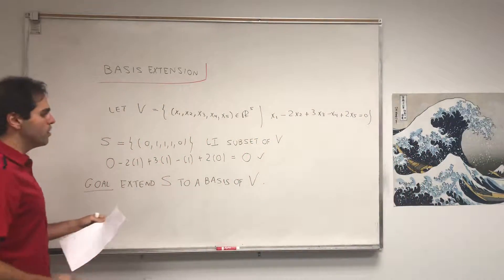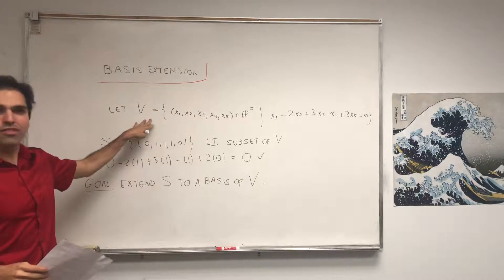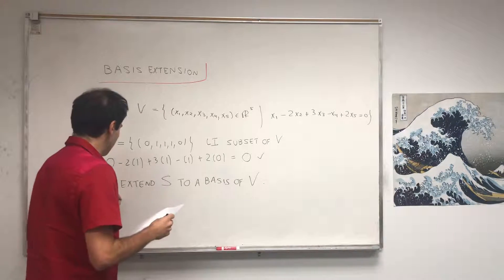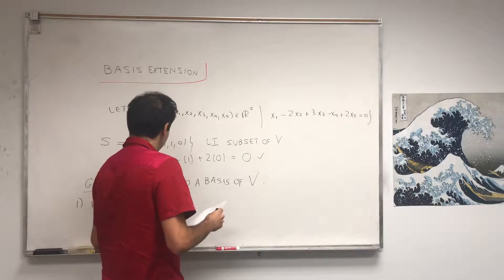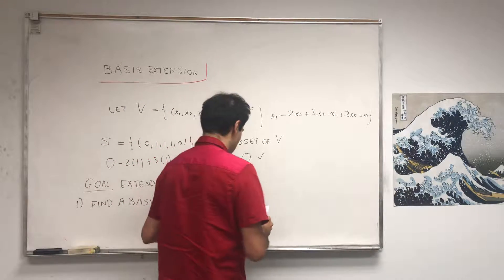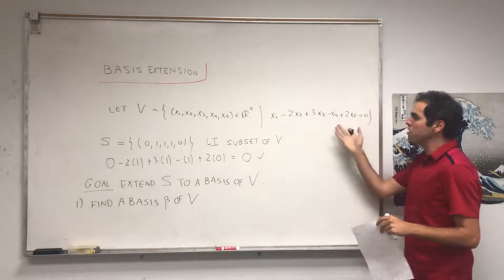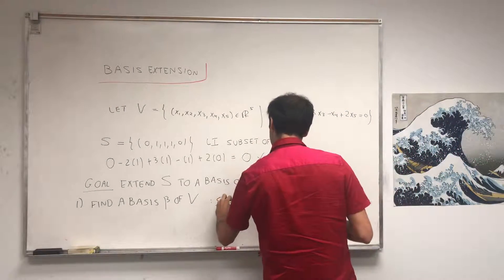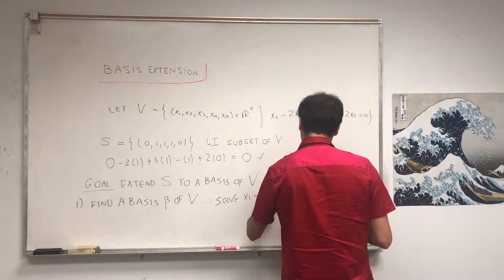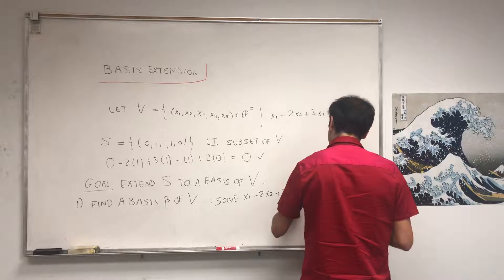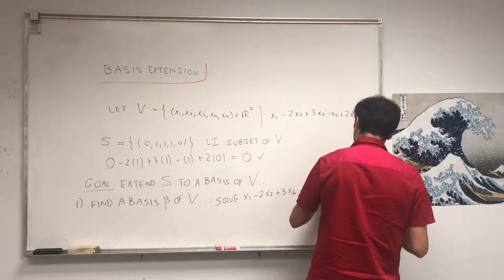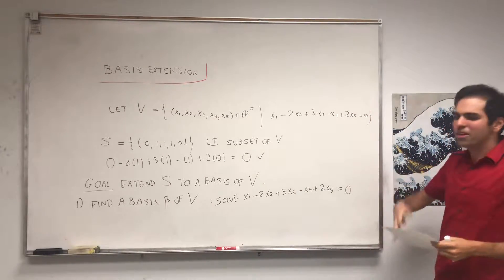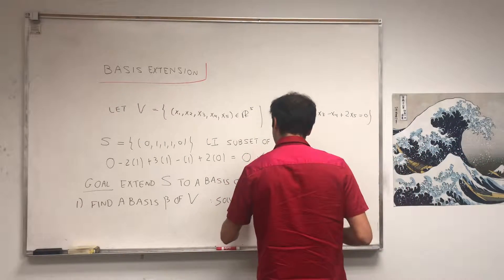How do we do this? It's based on a very neat trick. First of all, let's find a basis for V. V is given by an equation, so let's solve: x1 minus 2x2 plus 3x3 minus x4 plus 2x5 equals zero. Because it's just one equation, you can solve for x1: x1 equals 2x2 minus 3x3 plus x4 minus 2x5.